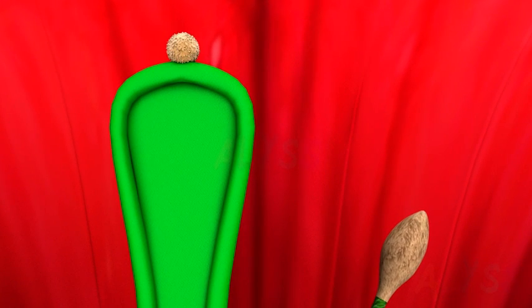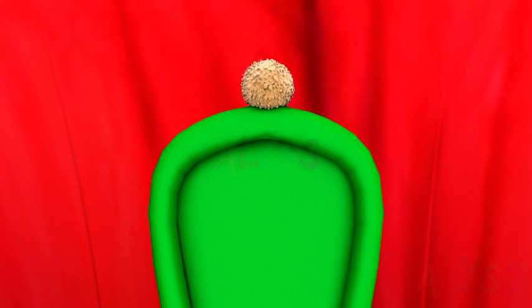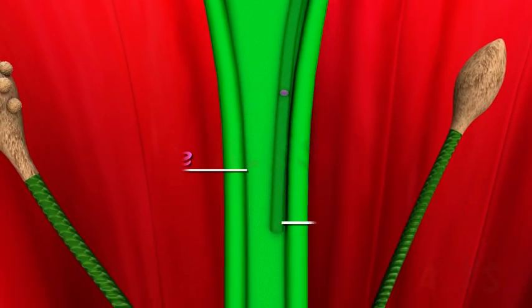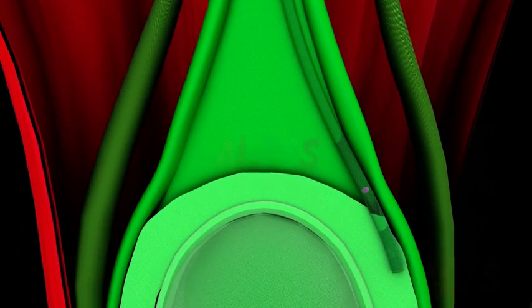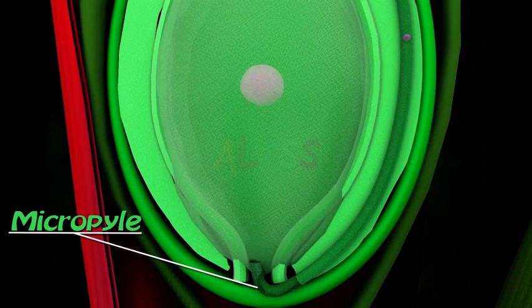Once pollination is done, male gamete has still not reached the female gamete. Pollen grain now grows a pollen tube which goes down through the style. It keeps secreting enzymes to make its path through the tube. Pollen tube enters the ovule through an opening called micropyle.